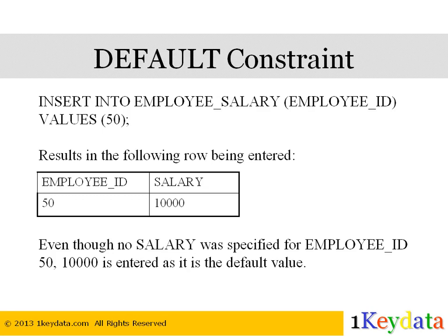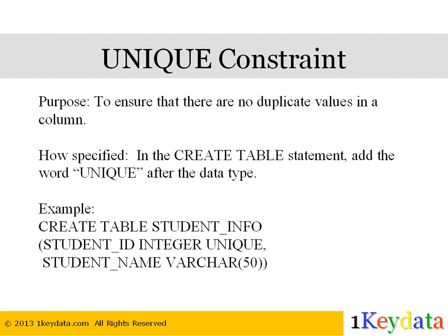This is because 10,000 is the default value for the salary column. The third constraint is the unique constraint. When a unique constraint is applied to a column, that column cannot contain duplicate values. The unique constraint is specified when we create the table by adding the word unique after the data type. An attempt to insert data that violates this constraint will result in an error. In the example here, student_id has the unique constraint and therefore all rows must contain a different value for student_id.